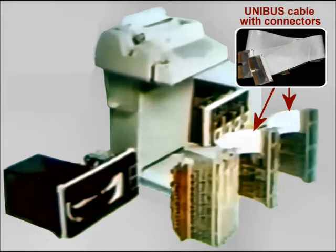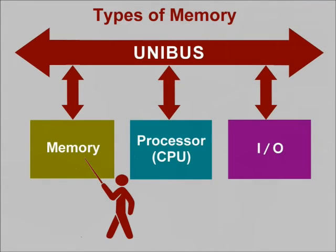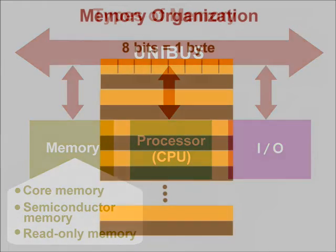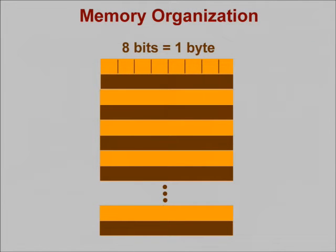So now let's take a look at PDP-11 memories. There are three basic types of memory: core, semiconductor, and read-only memory. The unibus permits a PDP-11 system to accommodate memories with different operating characteristics, speeds, and storage capacities. Here's how PDP-11 memory is organized. Note that it's broken down into a series of storage locations, each of which holds eight bits of information. We refer to these eight bits as a byte. Each byte location in memory is given a consecutive address starting with zero.